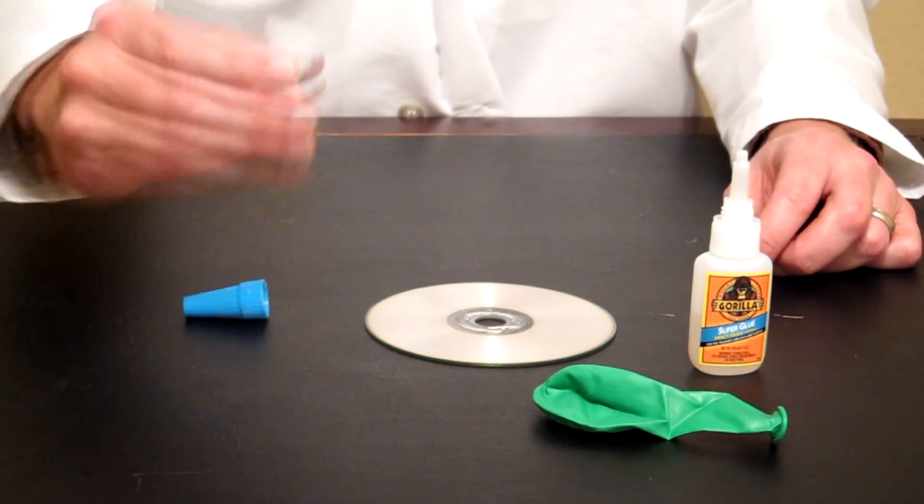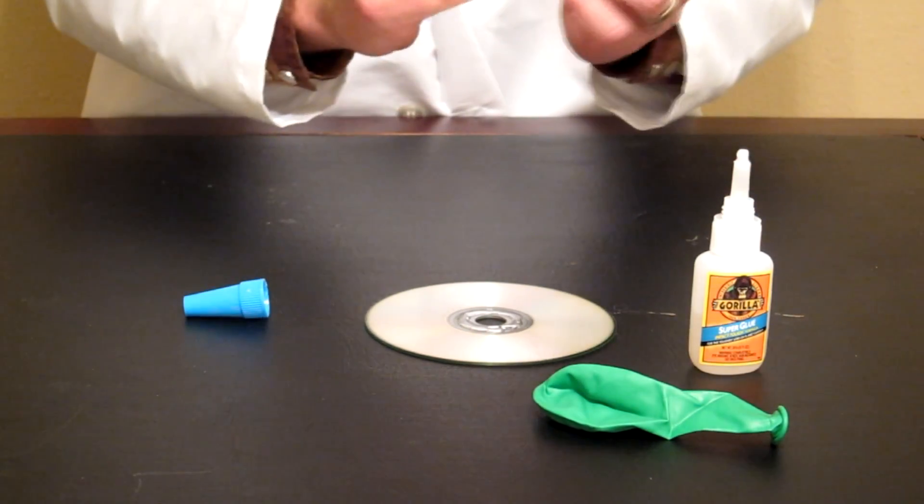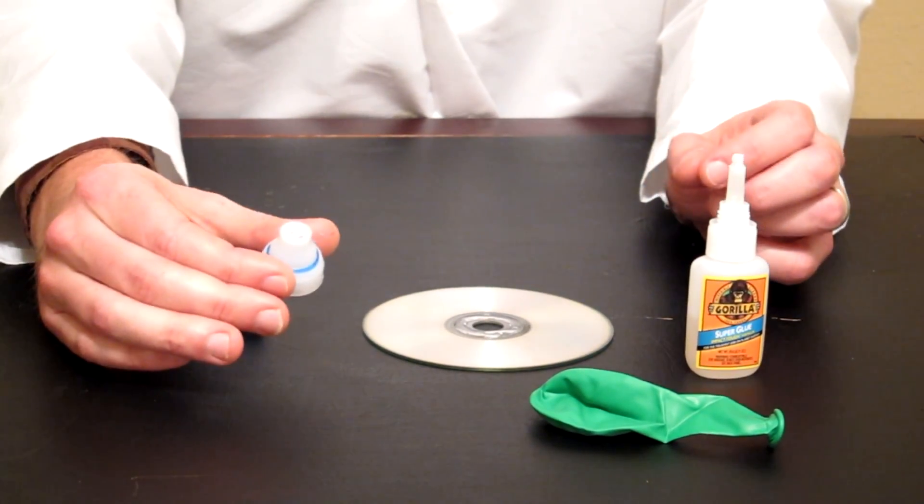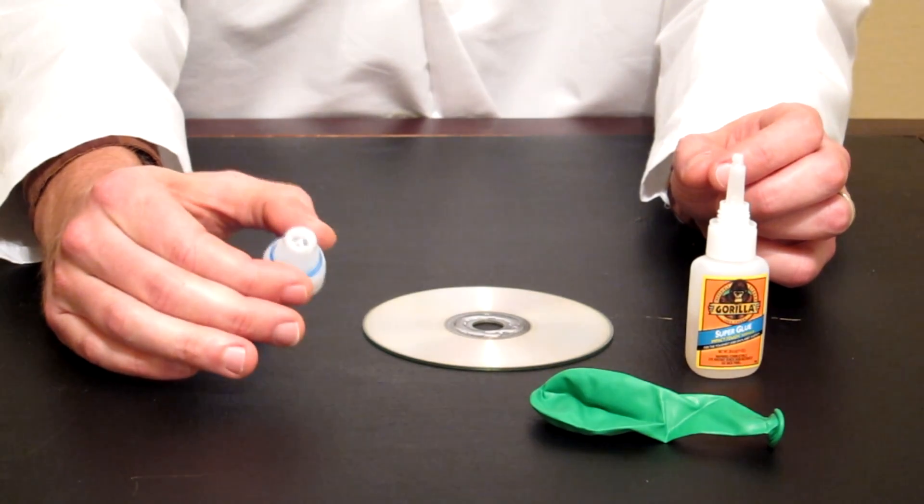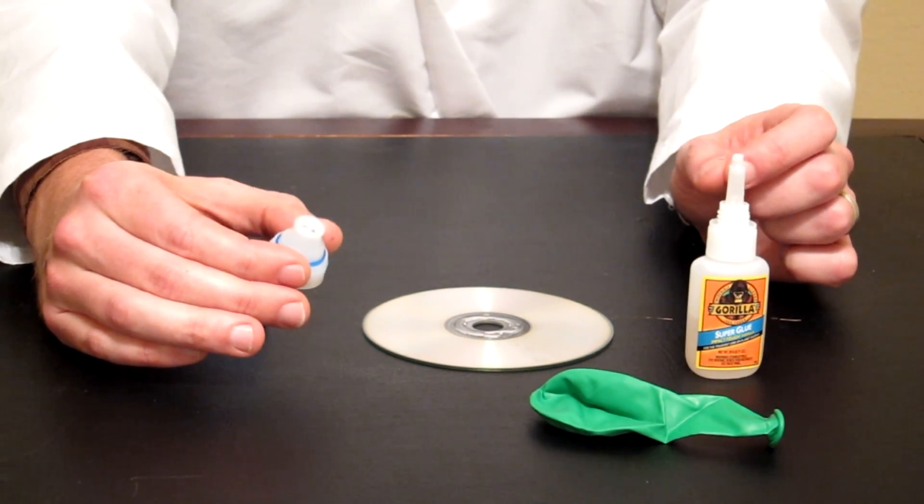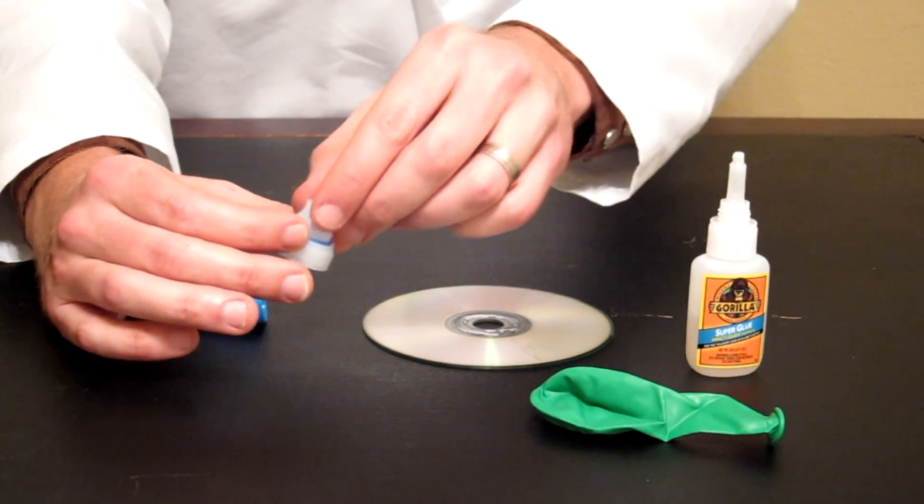Okay, the first thing you're going to need to do is glue down the sport bottle top to the top of the CD. You can find these sport bottle tops on any kind of sport drinks or bottled water. They usually have a top that you can re-close and open back up to drink later. I've already ripped off the blue top.